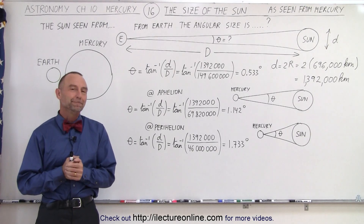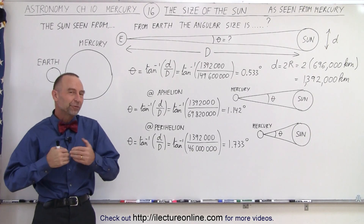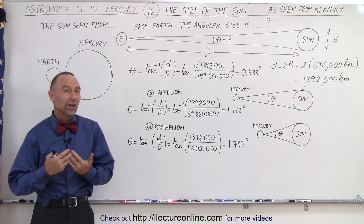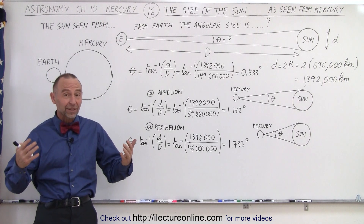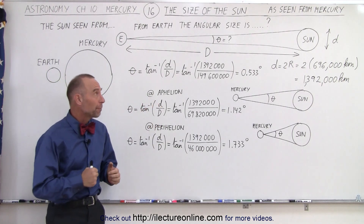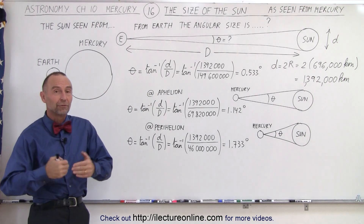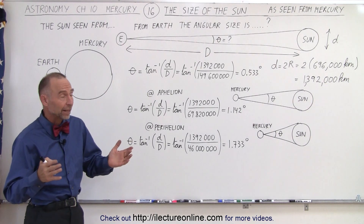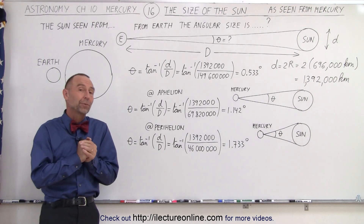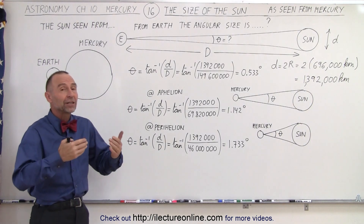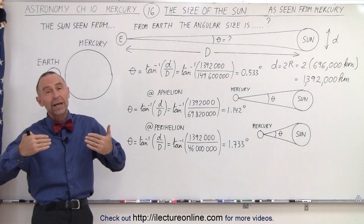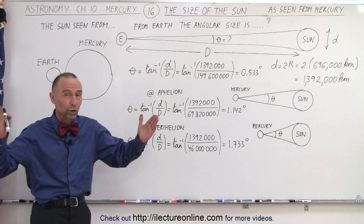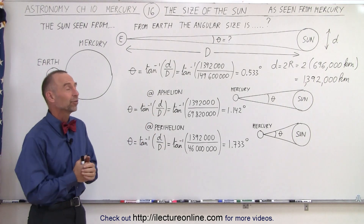Welcome to iLectureOnline. Another very interesting aspect of being on Mercury is looking at the Sun and realizing how large the Sun will appear to us from being so close to it. Of course, it depends a lot upon where in the orbit you happen to be. If you're at aphelion, farther away, then the Sun will not quite look as big, but at perihelion the Sun will look enormous in the sky.